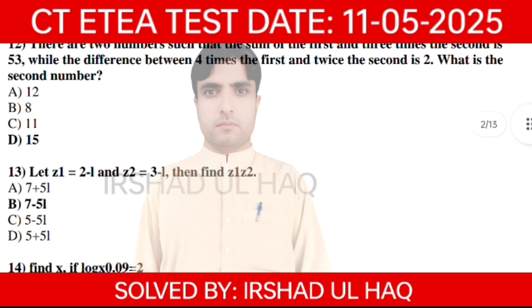Question 13. Let Z1 is equal to 2-L. Option number B: 7-5L.